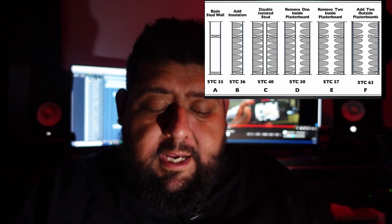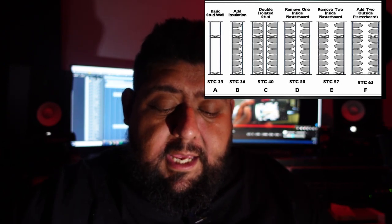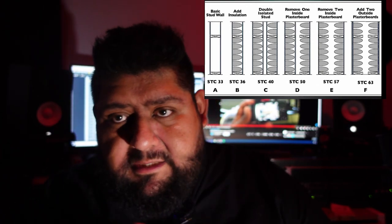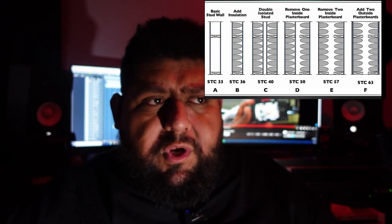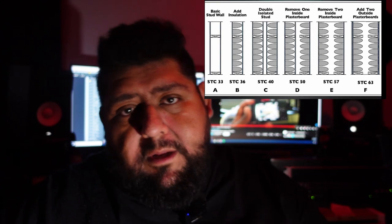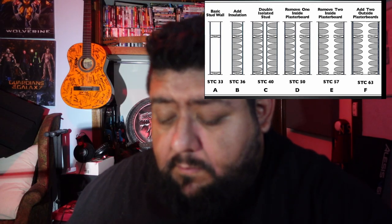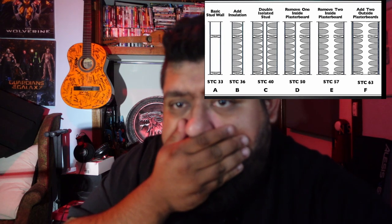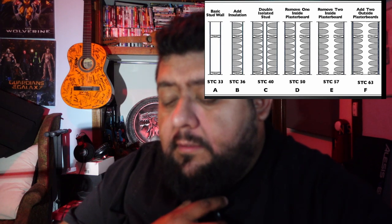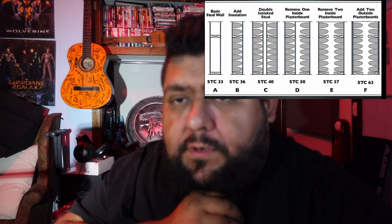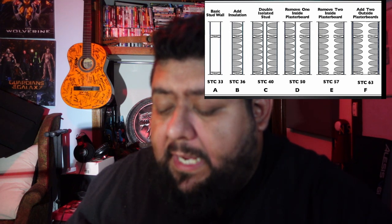The next best thing is airspace — as much airspace as possible, combined with a little bit of mass. There's a chart here showing sections A through F, each representing a wall viewed from the side. The first, section A, is a standard basic stud wall — no insulation, just plaster and plywood with studs in the middle, like you'd normally find in a house. That gives you STC 33, which is basically how many decibels it blocks — not much. Adding insulation gets you an extra three decibels, which again isn't a lot. Moving up to C — double isolated studs — that's essentially a room inside a room.